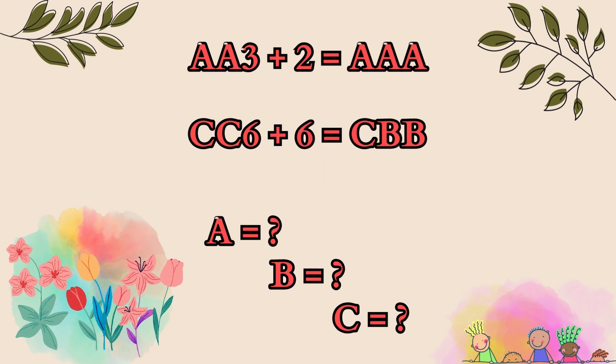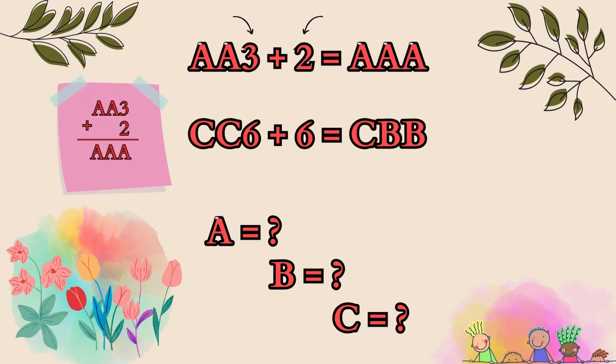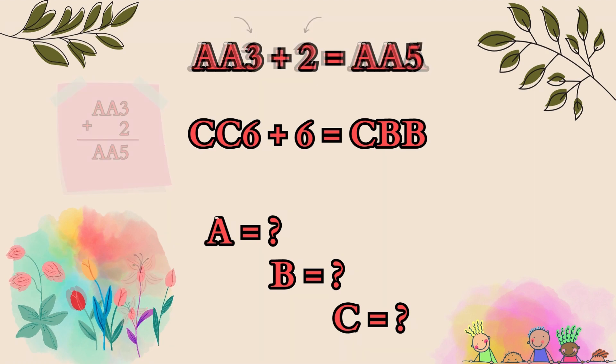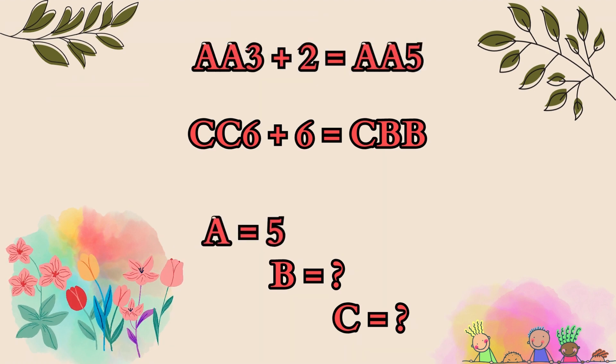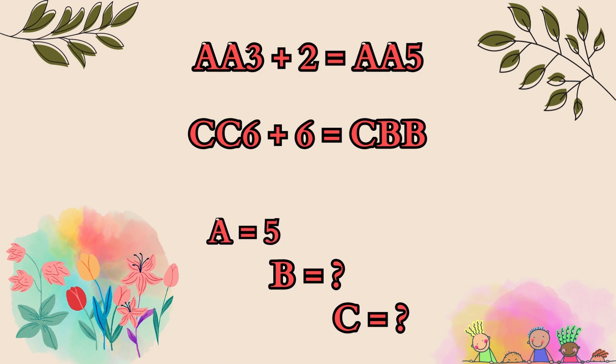Ready for the answer? Let's do this. To figure out a, we need to add the numbers in the ones place together. It might be easier for you to imagine if you rewrite the equation in the vertical adding form. Three and two make five, so a must be five.